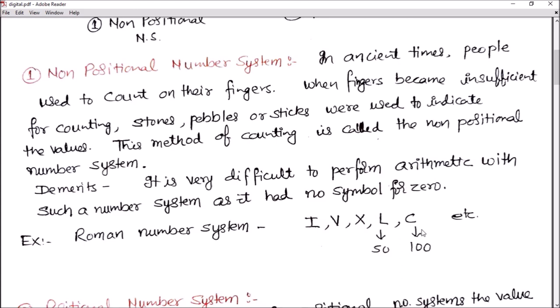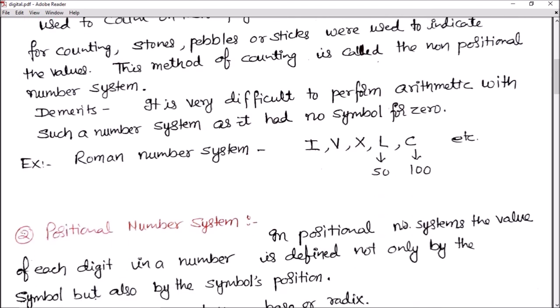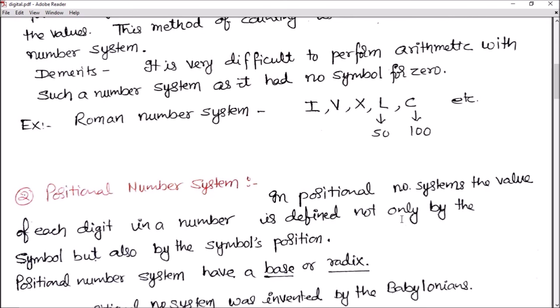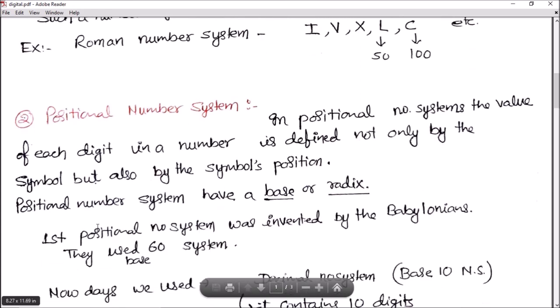The next system, which is used in present days, is the positional number system. In positional number system, the value of each digit in a number is defined not only by the symbol but also by the symbol's position. The position of the number system has a base or radix. The first positional number system was invented by the Babylonians.